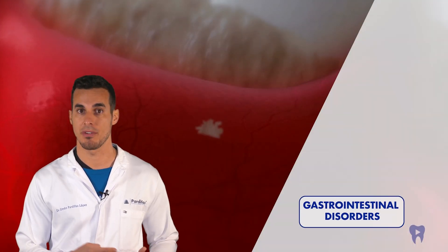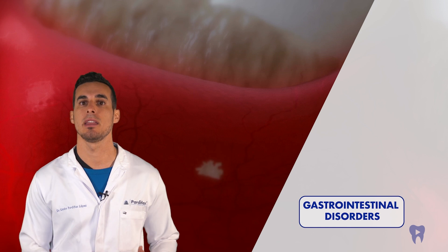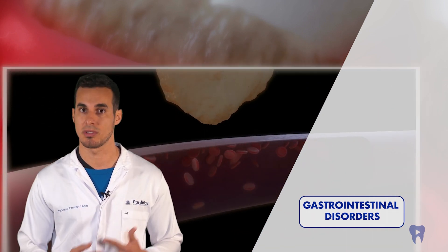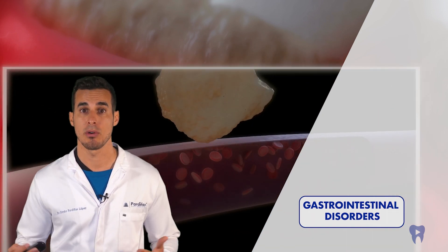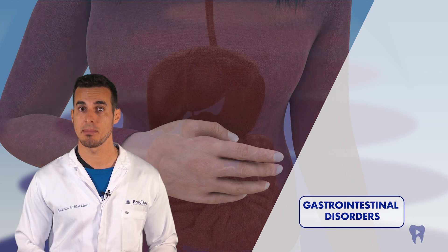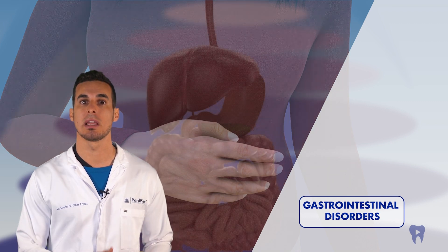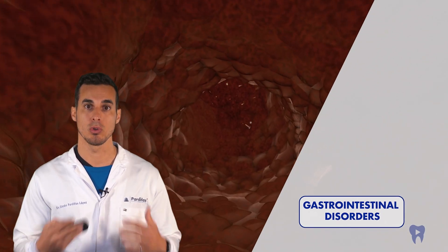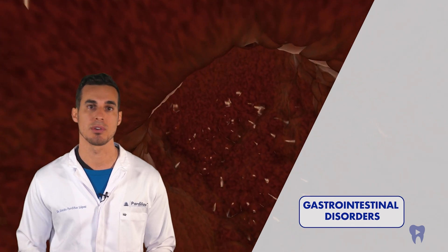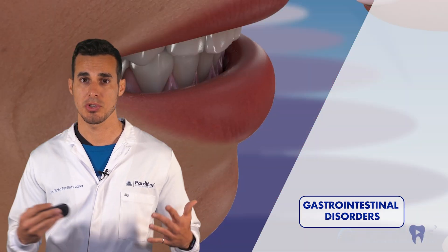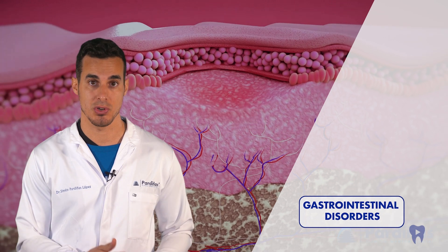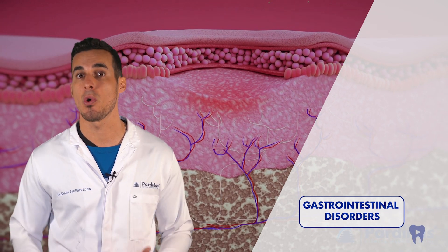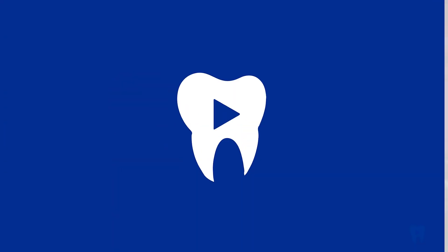Poor oral health, and especially infections and inflammation of the gums, can influence the development of gastrointestinal diseases. Bacteria from the mouth can travel to the digestive system and alter the intestinal microbiota, contributing to conditions such as inflammatory bowel disease and Crohn's disease. Additionally, oral manifestations common in Crohn's disease such as mouth ulcers may be related to or aggravated by periodontitis.